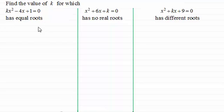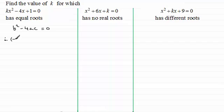To do this, for equal roots remember the discriminant, which is given by b squared minus 4ac, has to equal 0. And b in this case is minus 4, so we would have minus 4 all squared minus 4 multiplied by a. a is the coefficient of x squared which is k, and c is the constant at the end, which is 1. And that equals 0.